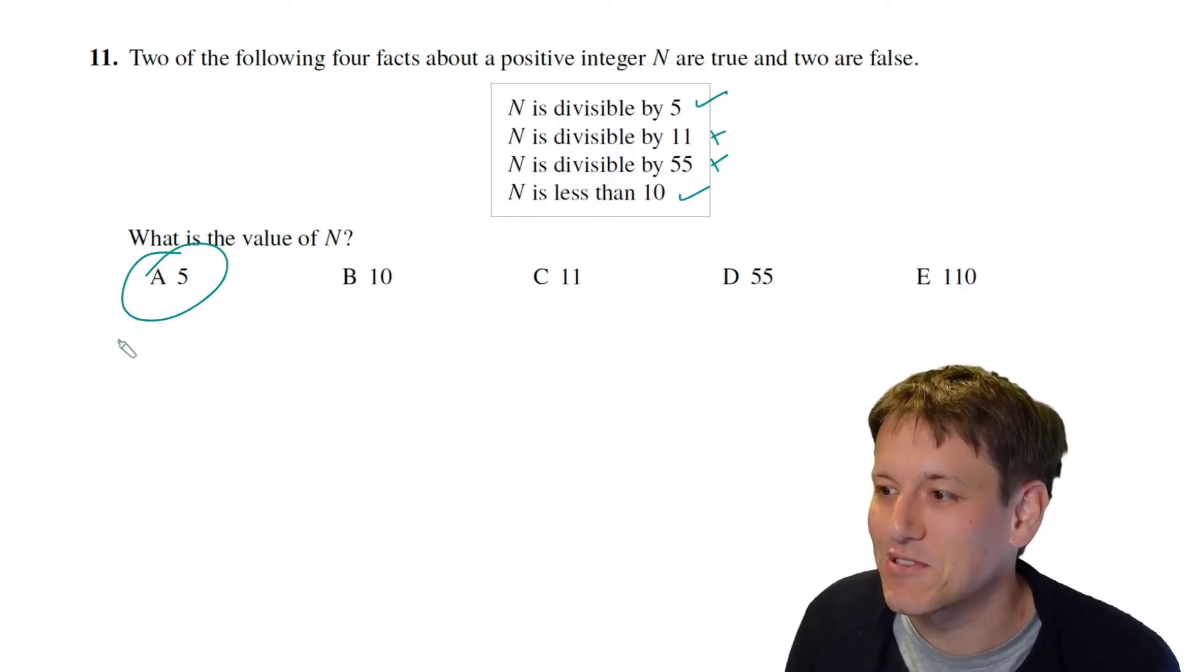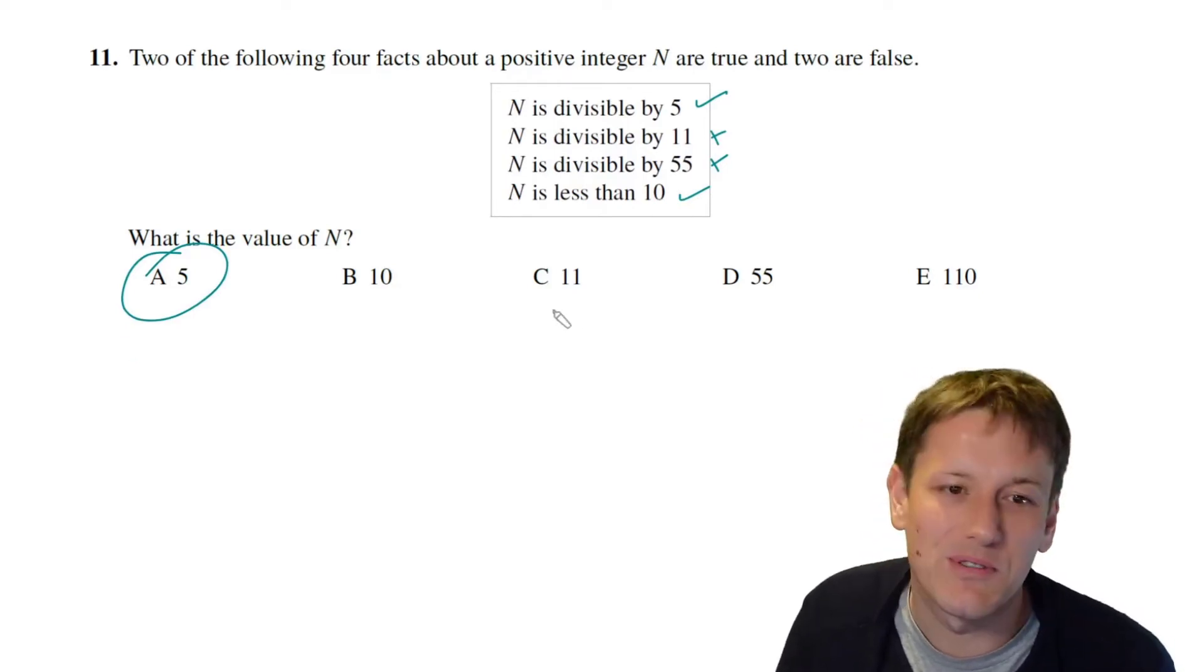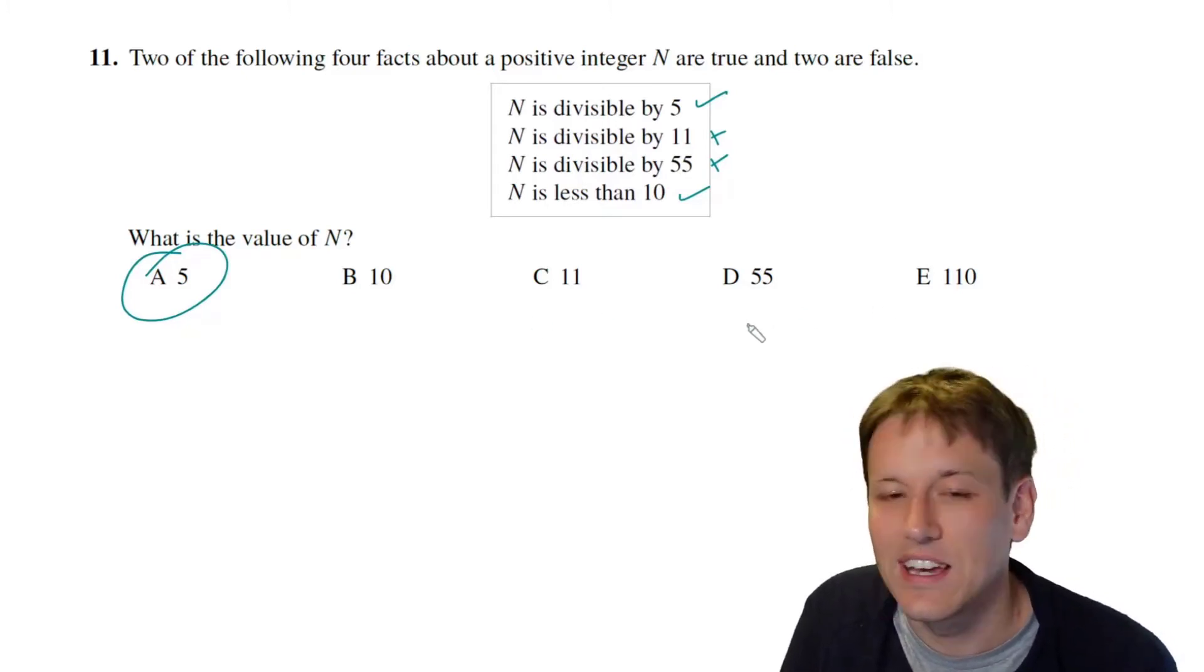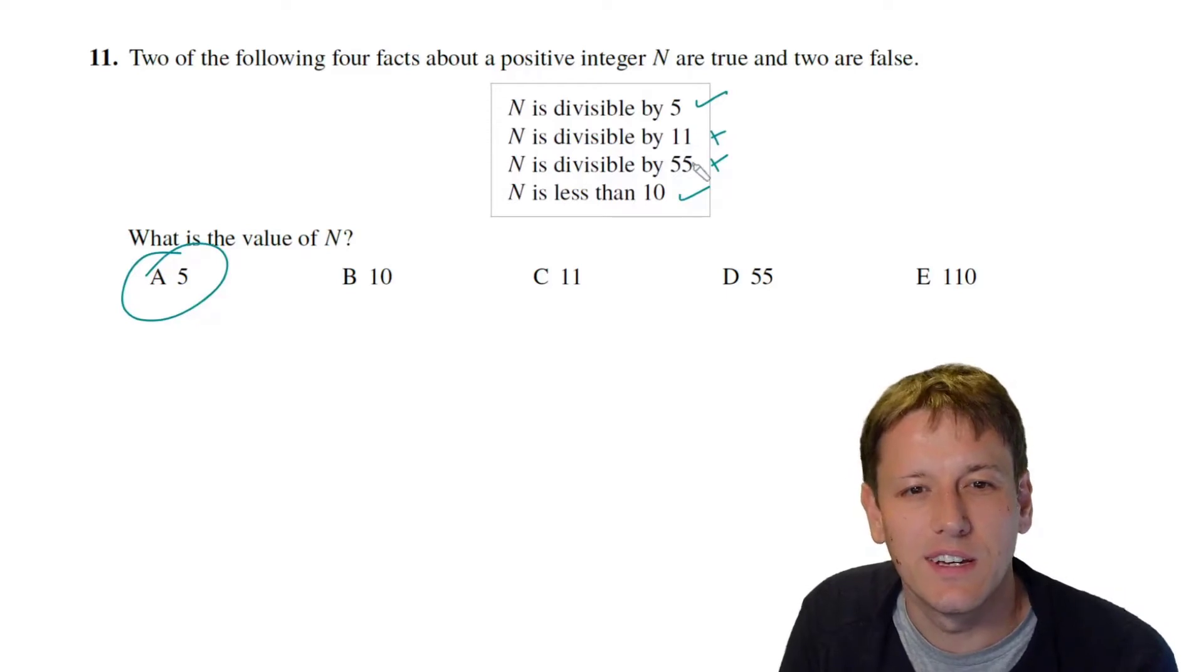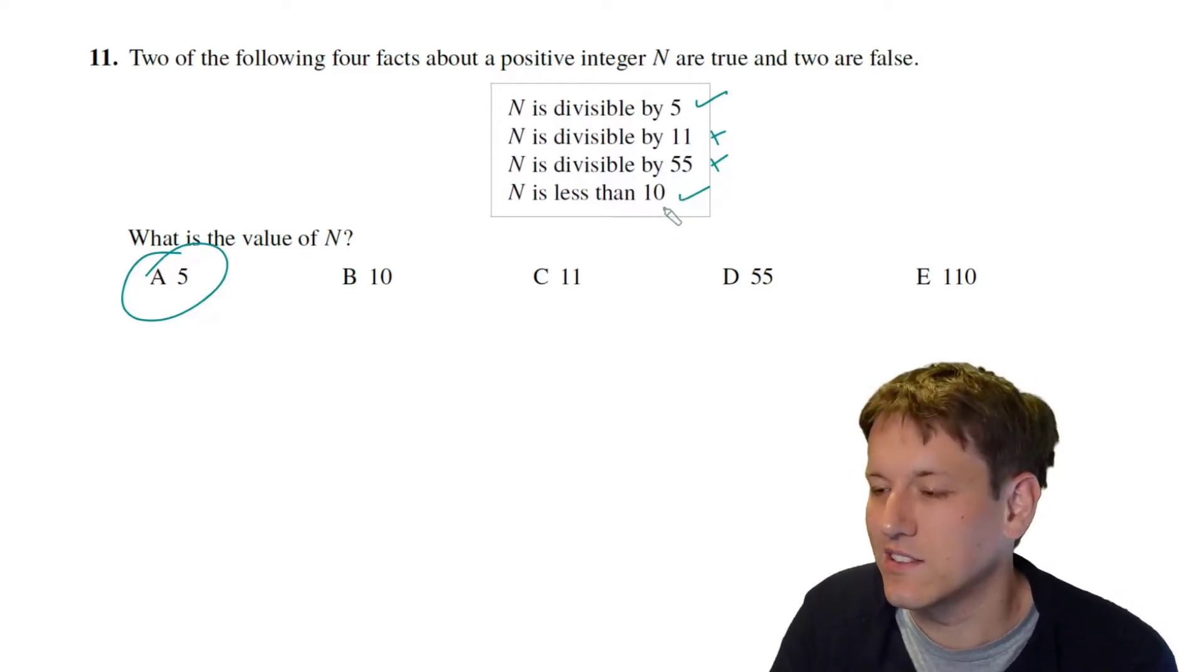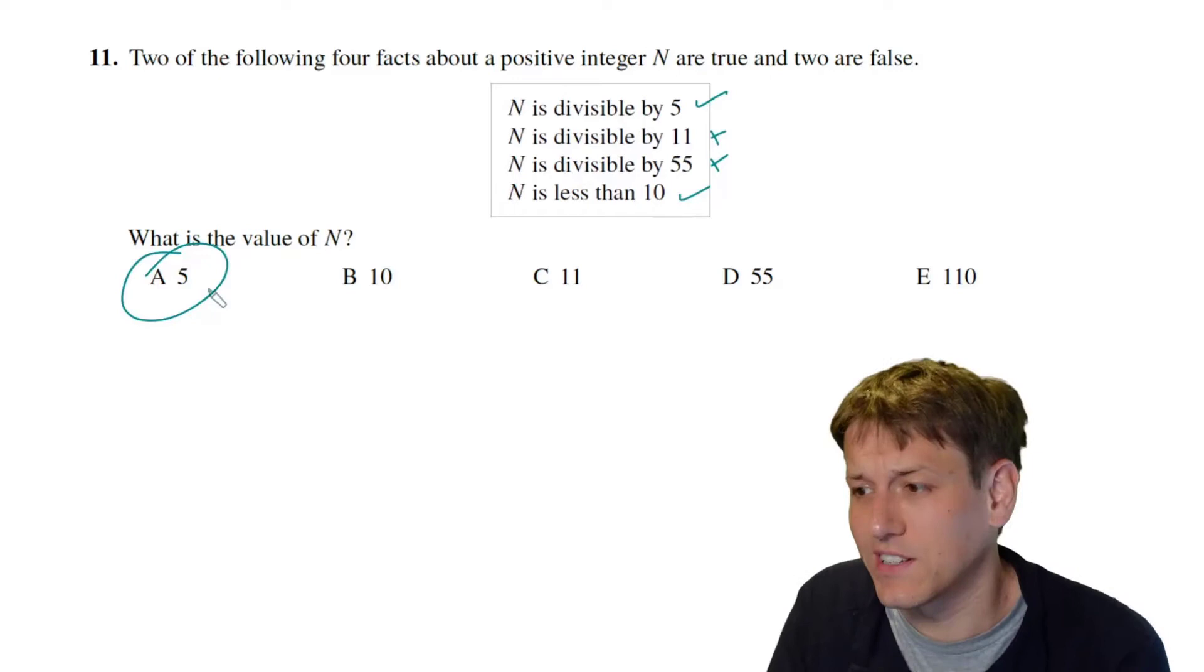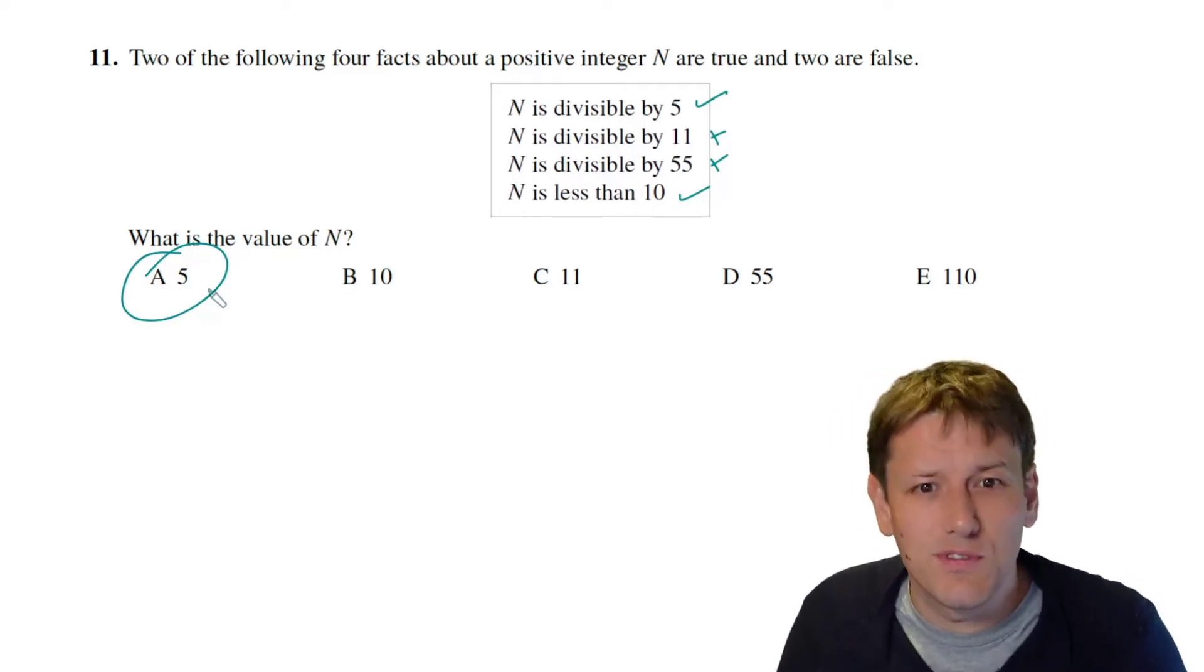That one has exactly two of the statements being true and two of them being false and that won't be true for any of the other ones here. For example you know 55 is divisible by 55, 11, and 5 but it's not less than 10 so three of them are true. Okay so anyway we've answered the question at that point and in the real challenge you can just move on.